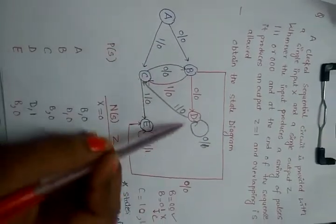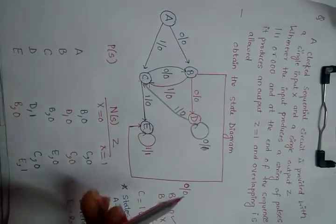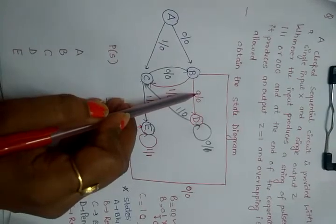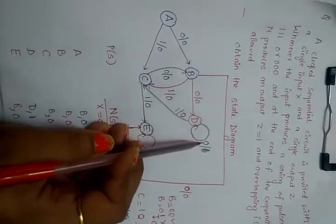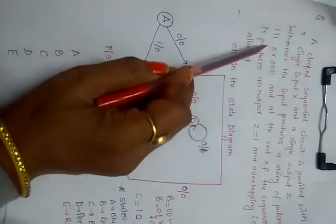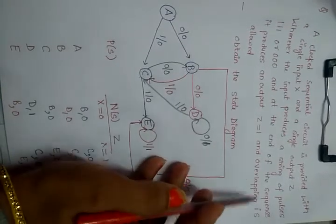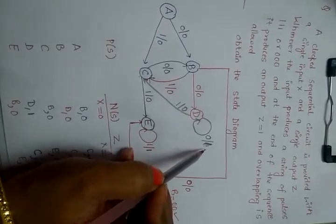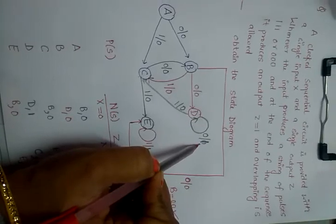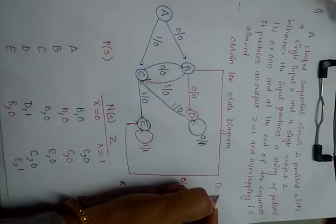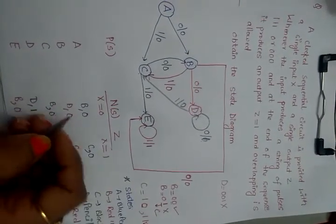We have now seen states D and E. At state D, if we get 0 further from 00, the sequence 000 is complete and the output is 1. Because overlapping is allowed, we will go back to our own state and the output will be 1. If we get 001, we will not have our required sequence.